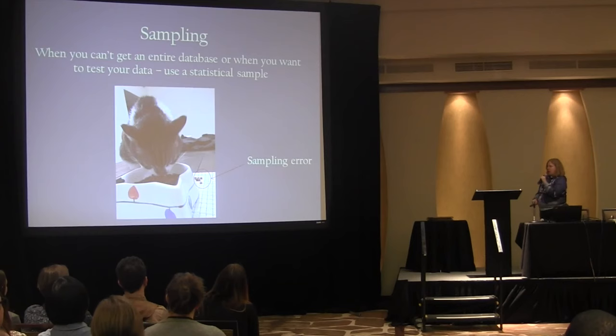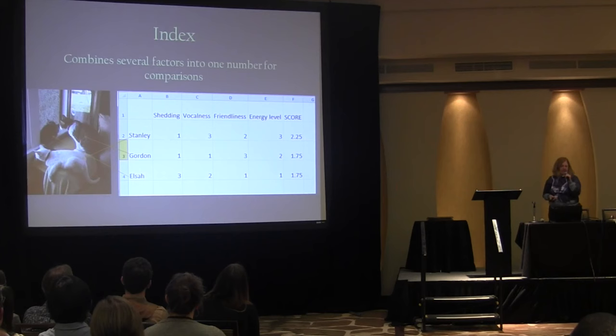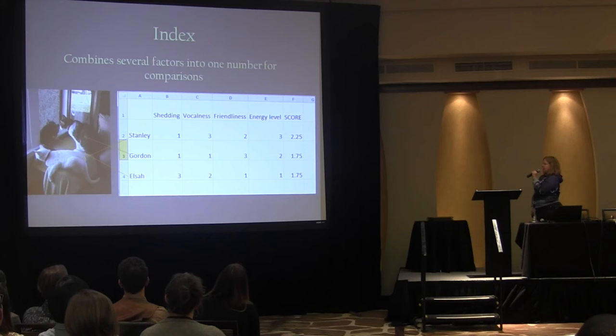You can also use indexes to evaluate many concepts. I used one to evaluate the quality of my cats — Stanley, Borden, and Elsa — on several factors: the amount of shedding, vocalness, friendliness, and energy level. Then I averaged those scores to come up with an index, and Stanley came out on top. Don't tell Borden.